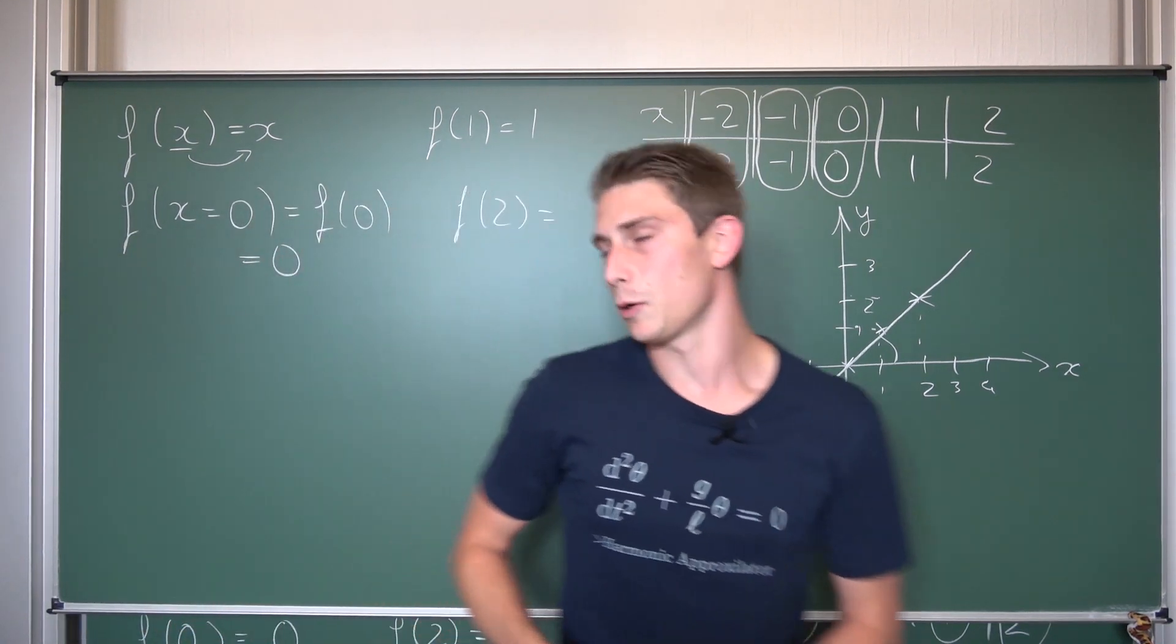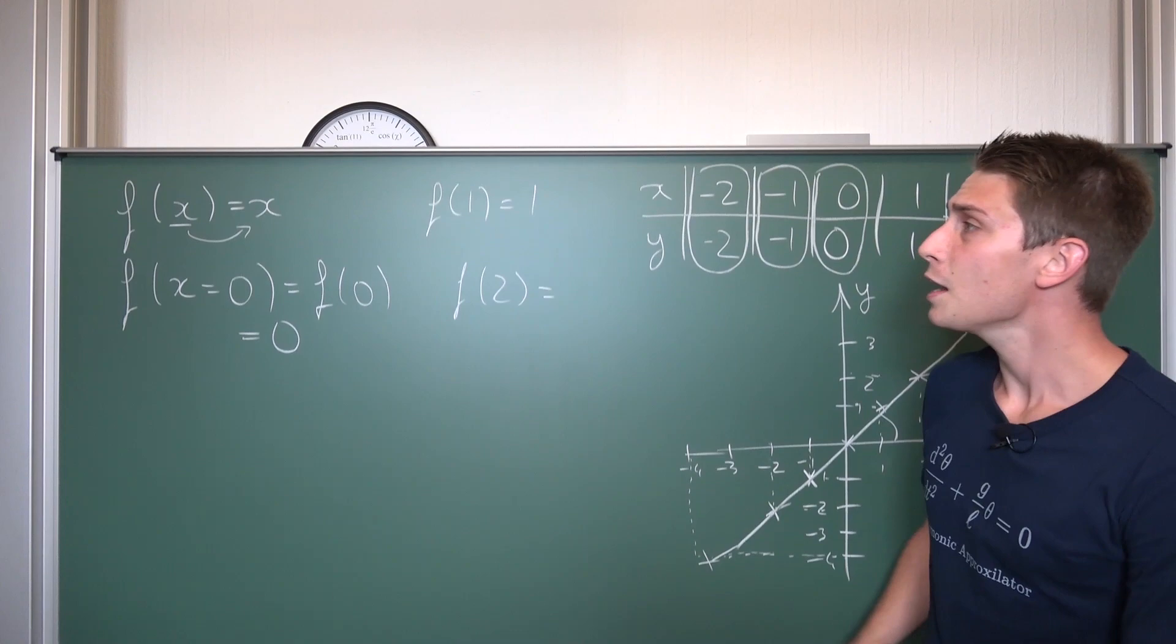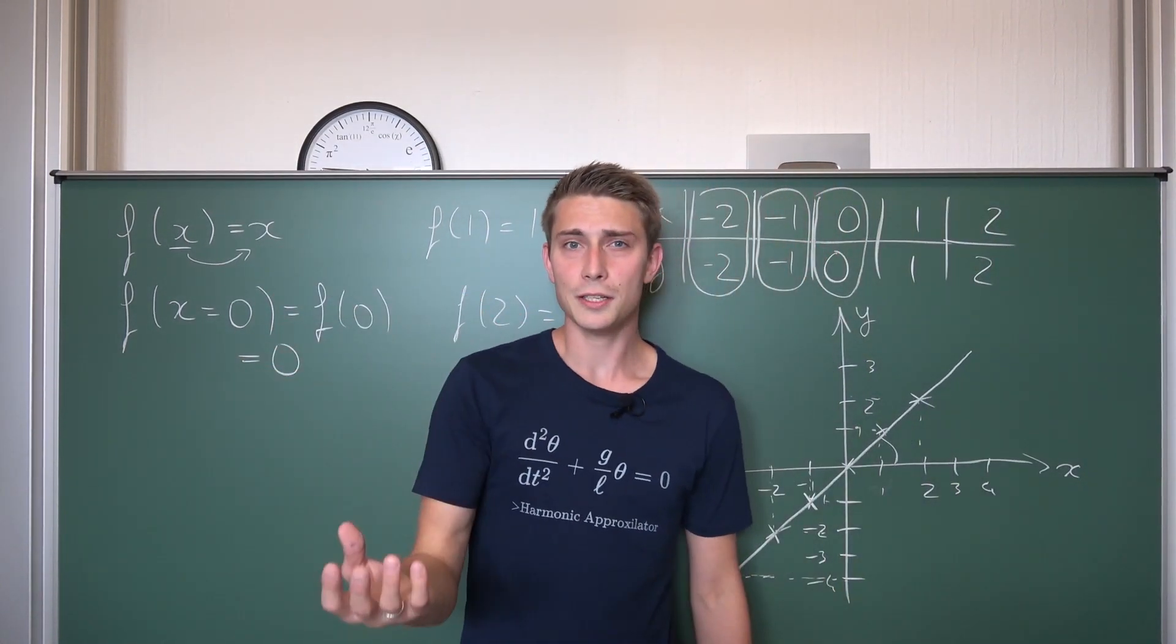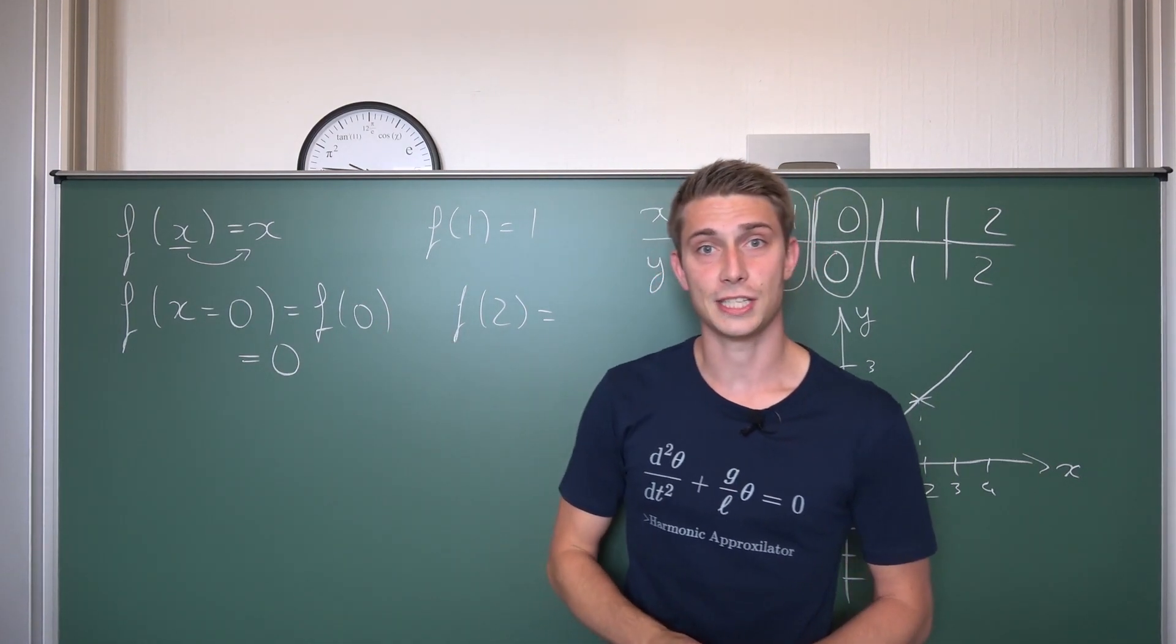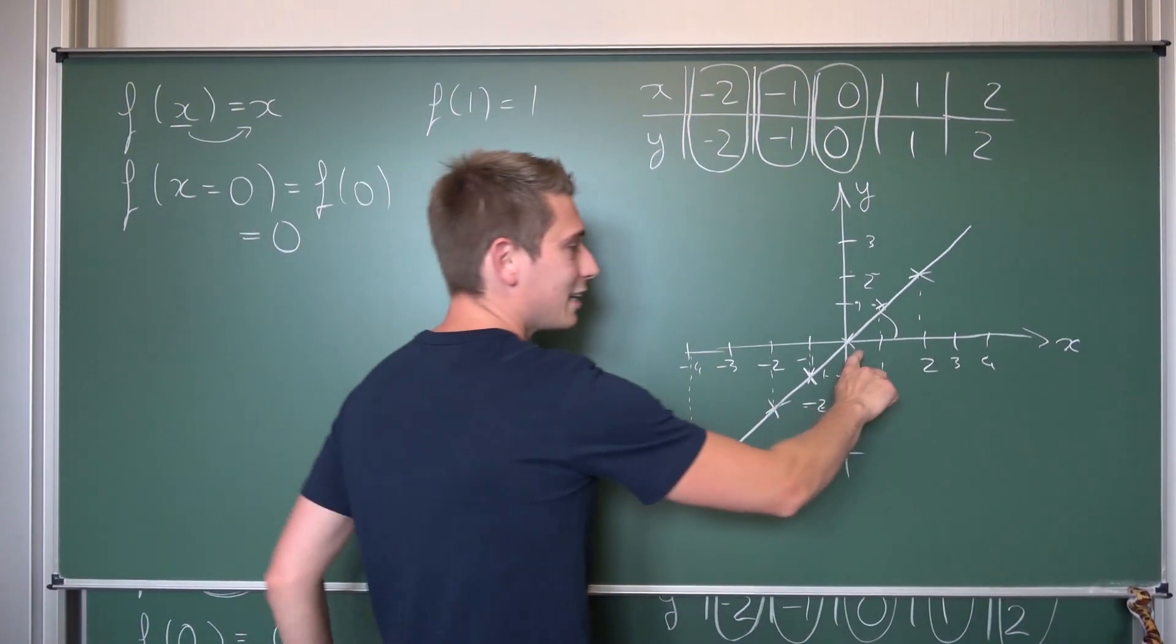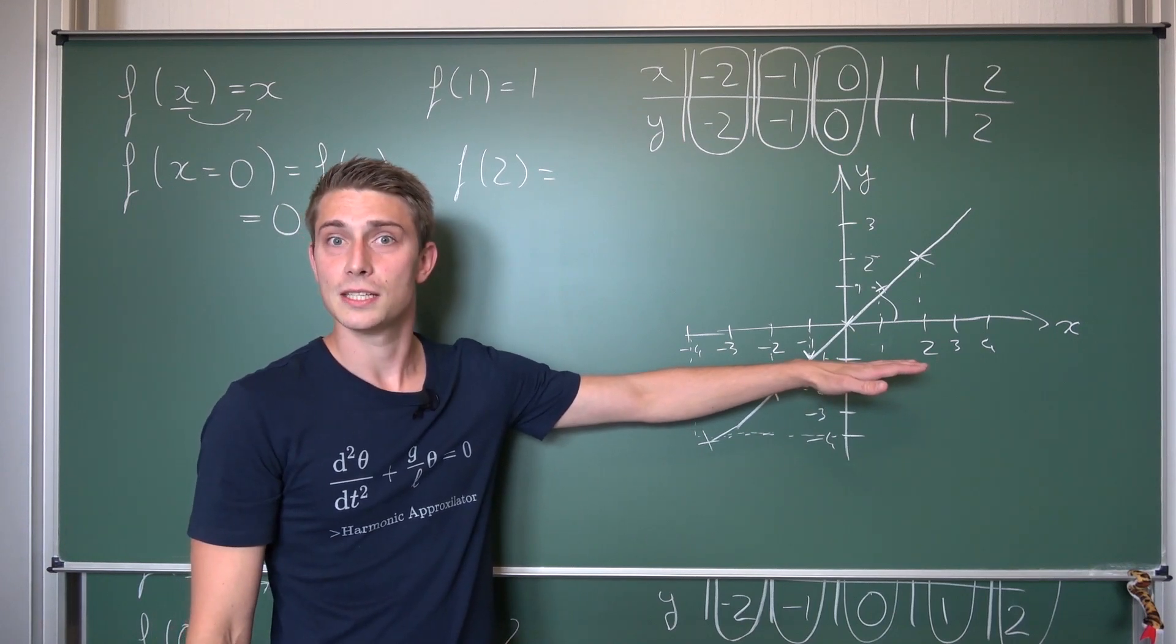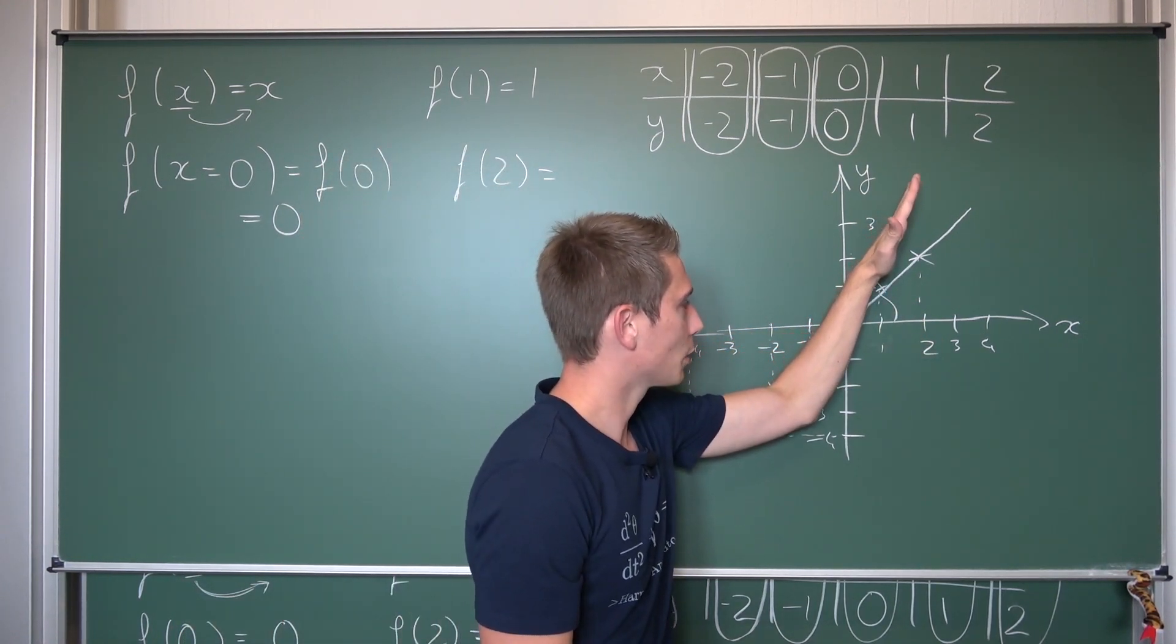And this basically concludes this video about the identity function. Next time, we are going to go one step further and say, well, we don't have only the identity function. We are going to expand our knowledge that we have here to all the proportional functions there are. Meaning, proportional functions are just linear functions that go exactly through the coordinate system's origin. The identity function is a proportional function. But we also have, for example, this one right here.